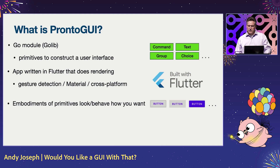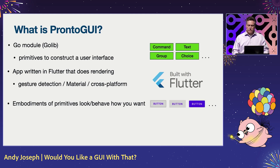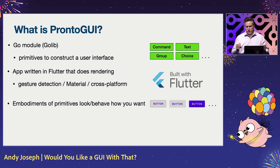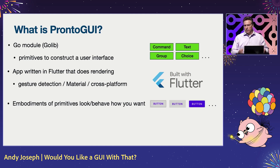The app also has inside of it what I call embodiments, which allow you to define the look, feel, and behavior of the primitives once they're shown on the screen. For example, a button could be an outline button versus a text button and so on.